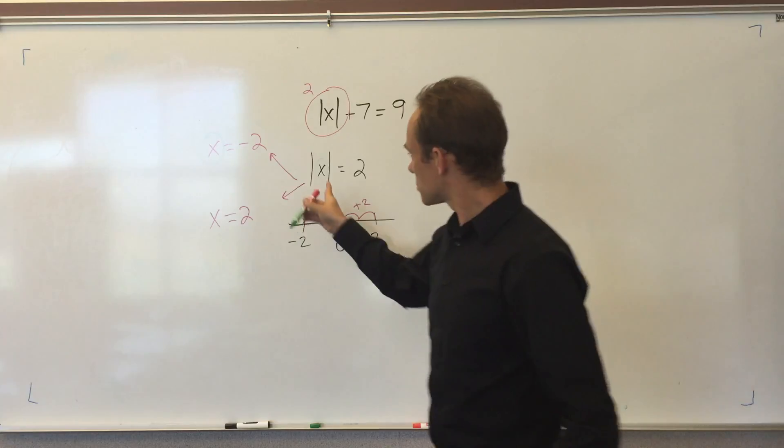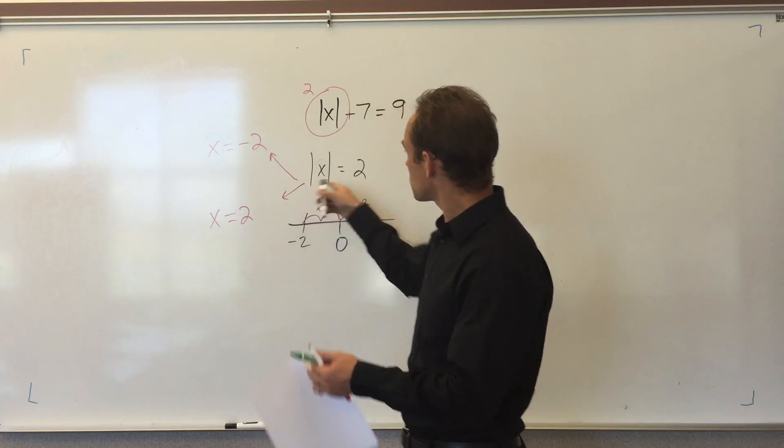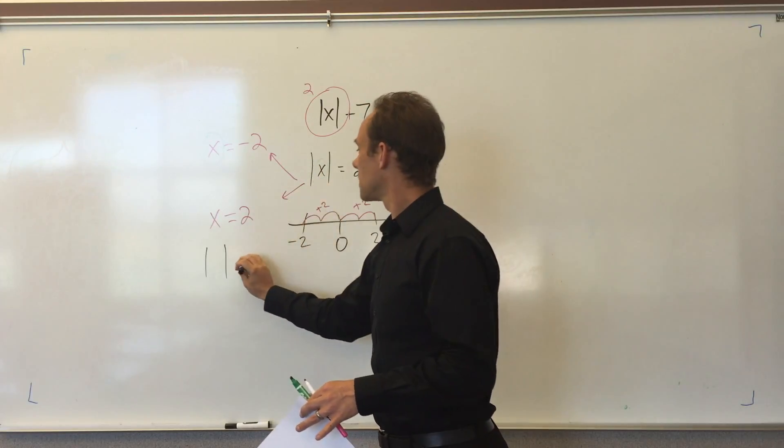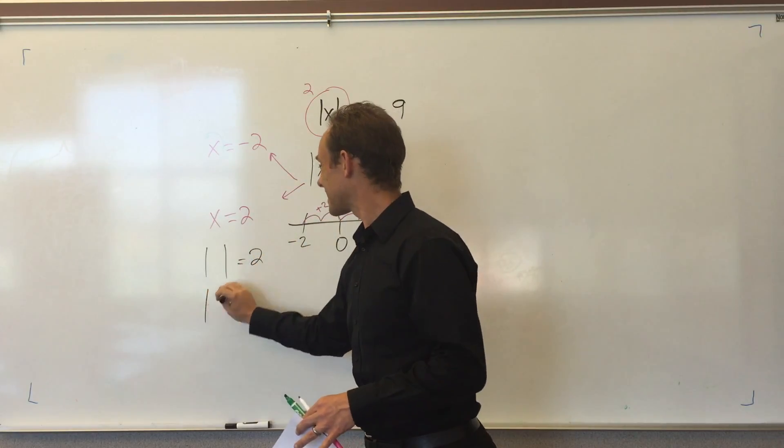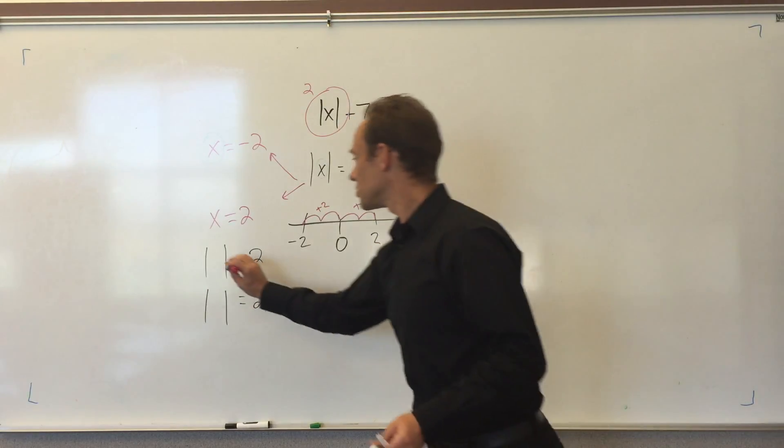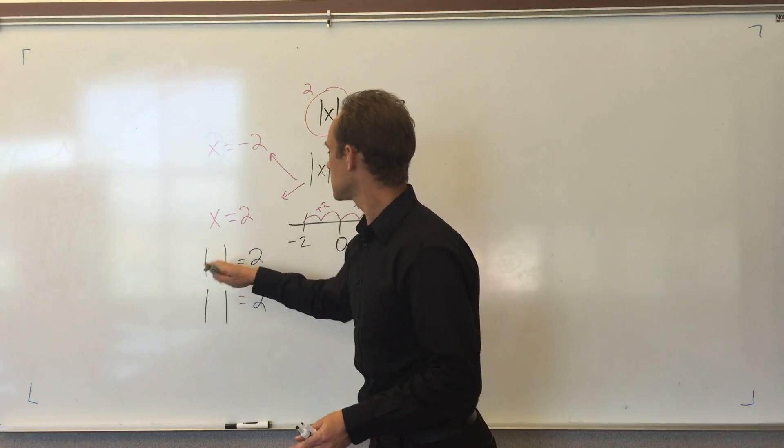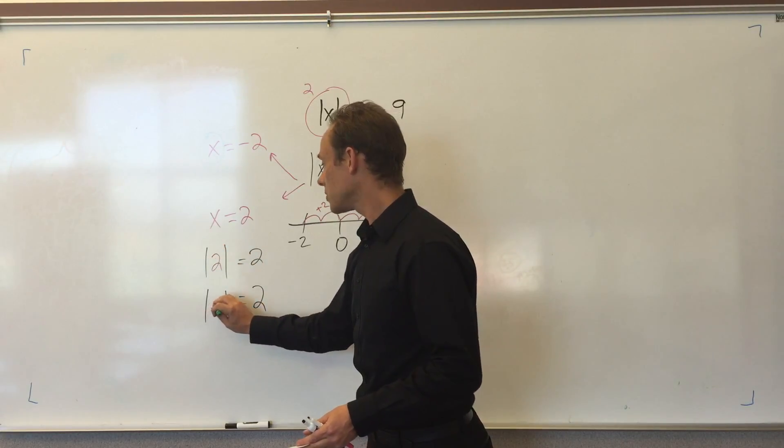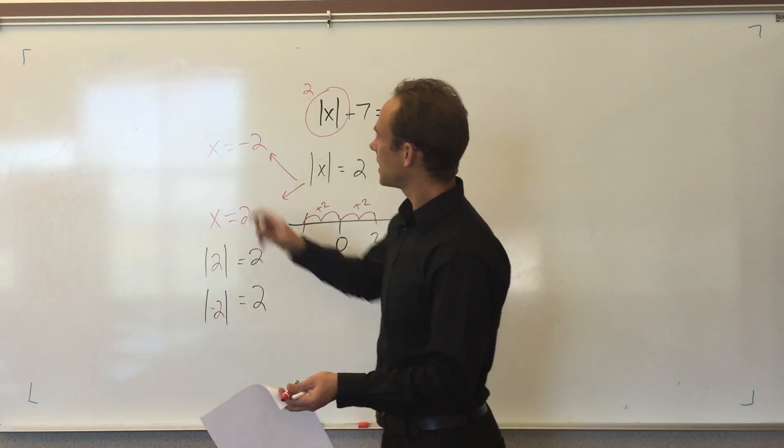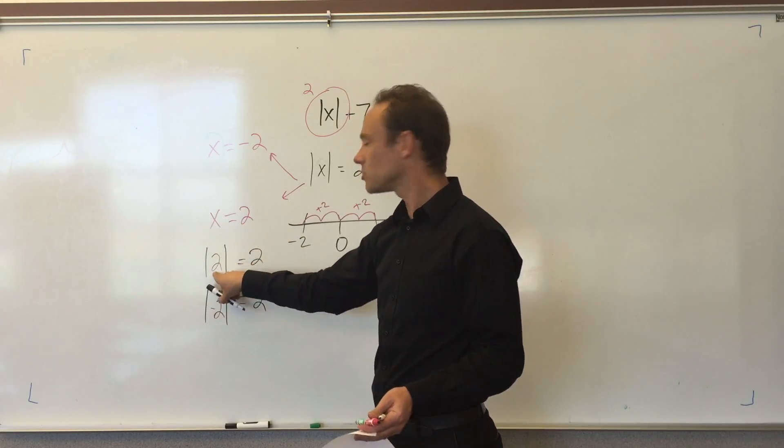There's two options for this x. Either this x is equal to 2 or negative 2. There's two possible answers you could put inside there to make that true. You could put a positive 2 or you could put a negative 2. My claim here is that x is equal to negative 2 because negative 2 is a possible solution, and x is equal to 2 because 2 is also a possible solution.